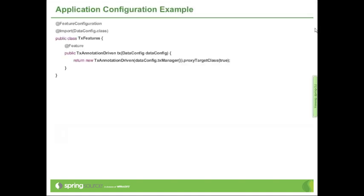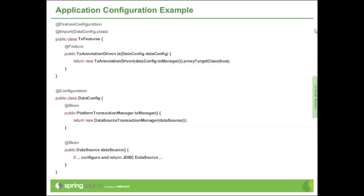Let's look at a quick example illustrating several related features and the interaction between feature configuration classes and regular configuration classes. What we call feature configuration is basically a variant of the @Configuration class that Spring 3.0 introduced. However, feature configurations have a special lifecycle — they are applied very early in the application context bootstrap phase, at the same time that XML namespace-based feature configuration would be processed. Feature configurations are allowed to have feature methods, and each feature method returns a feature specification.